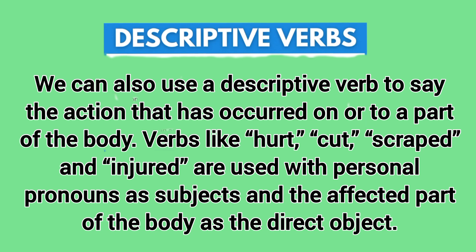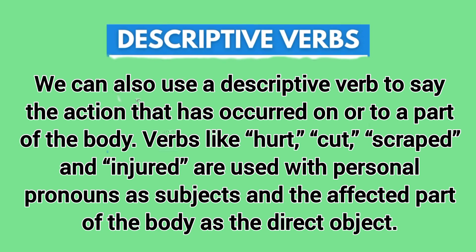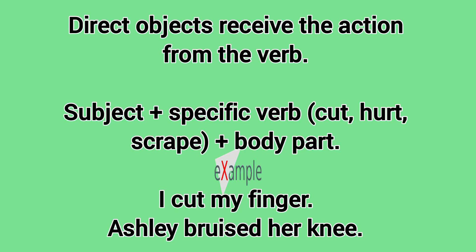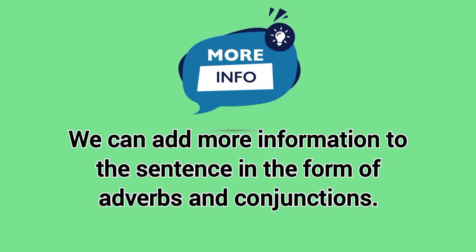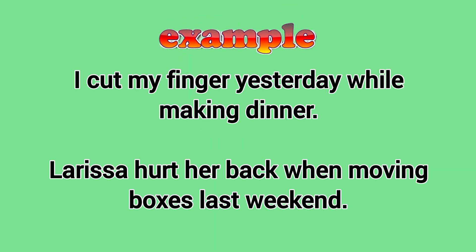We can also use a descriptive verb to say the action that has occurred on or to a part of the body. Verbs like 'hurt,' 'cut,' 'scraped,' and 'injured' are used with personal pronouns as subjects and the affected part of the body as the direct object. Direct objects receive the action from the verb. We can add more information in the form of adverbs and conjunctions: I cut my finger yesterday while making dinner. Larissa hurt her back when moving boxes last weekend.